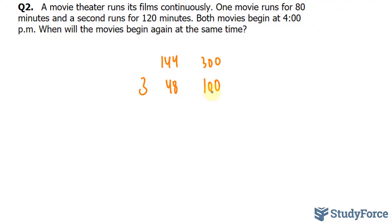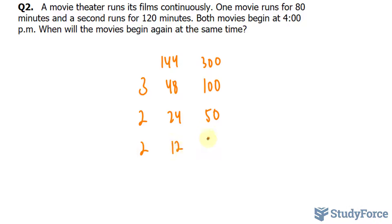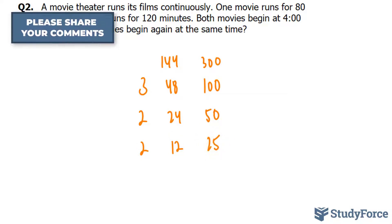Now, if you did not know that trick, you could have started with two — it doesn't change the outcome. 48 and 100 are both divisible by two, giving us 24 and 50. Both of those are also divisible by two, giving us 12 and 25.